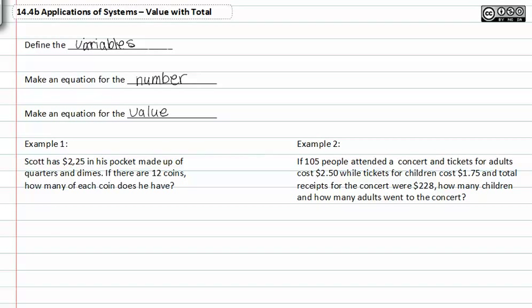If Scott has $2.25 in his pocket made up of quarters and dimes, then we have to write quarters and dimes. Q and D represent the number of quarters and the number of dimes Scott has. If there are twelve coins, how many of each does he have?